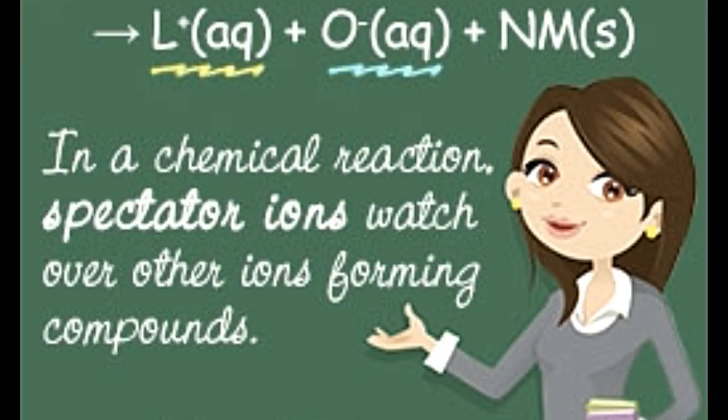From the working of the spectator ions, it is clearly visible that these ions play a significant role when it comes to balancing the charges of a chemical equation. They carry out the entire charge balancing without disturbing the equilibrium of the equation.